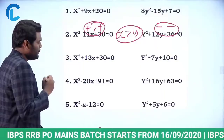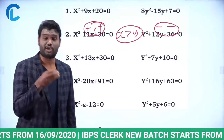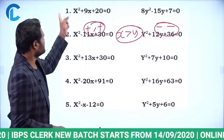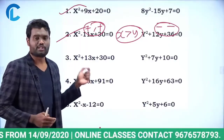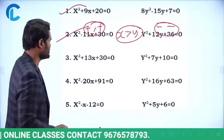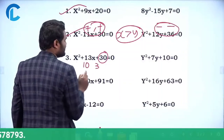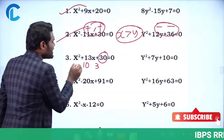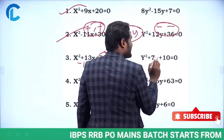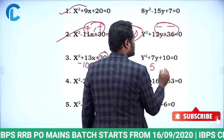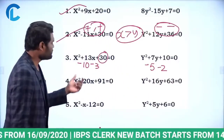Let's look at the next one: x² + 13x + 30 = 0 and y² + 7y + 10 = 0. Obviously you have to solve this question; you can't mark the answer directly, because it is not given in a similar manner to the above questions. Now, 13 can be written as 10 + 3, and 10 × 3 = 30, so roots are minus 10 and minus 3. For y, 7 can be written as 5 + 2, and 5 × 2 = 10, so roots are minus 5 and minus 2.